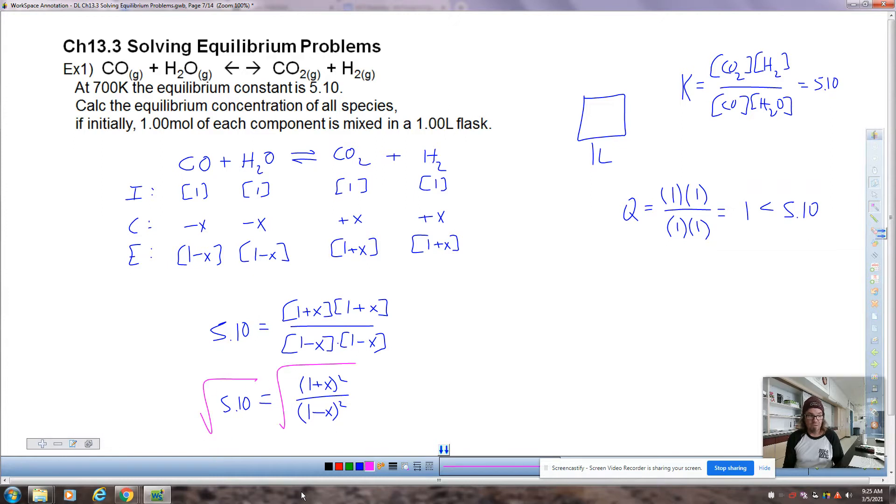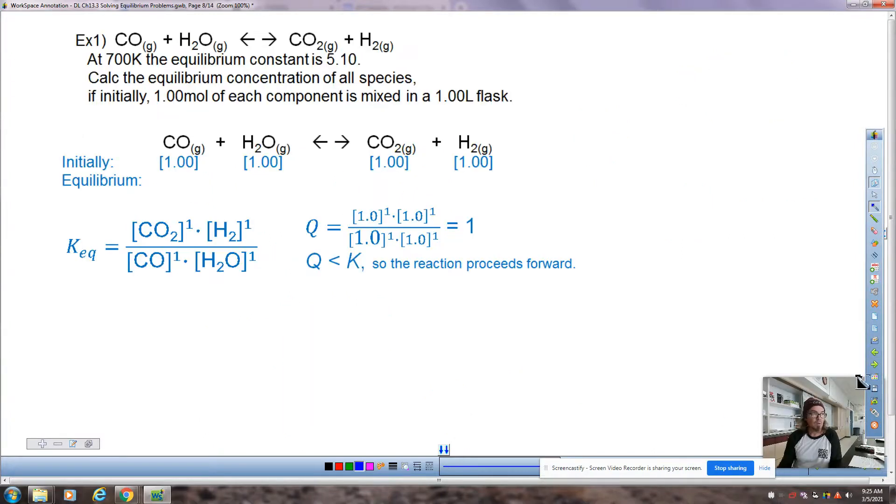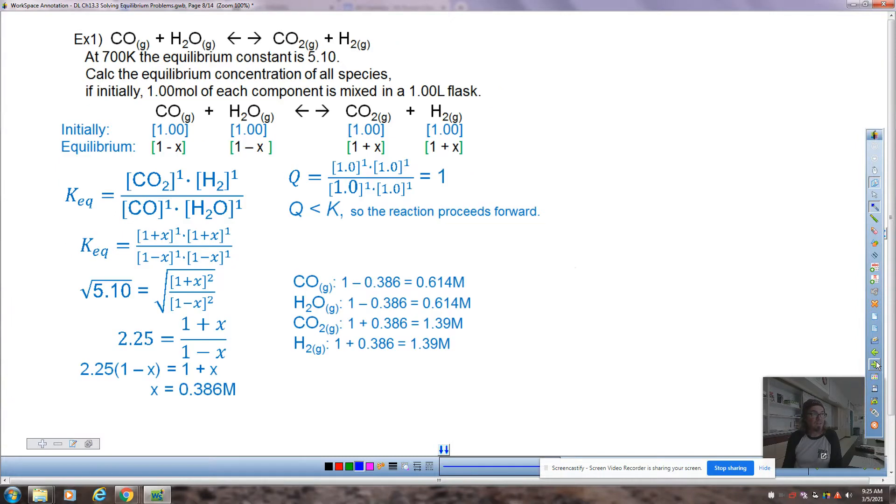Then here's where we start getting into some math rules. I'm going to square root both sides. When I do that, that gives me 1 plus X over 1 minus X equals root 5.10. Then treating this like it's a proportion, cross multiply and divide maybe. Basically, at this point, what we're trying to do is we're trying to solve for the X, right? So I'm going to let you work on your math skills to be able to pull that off.